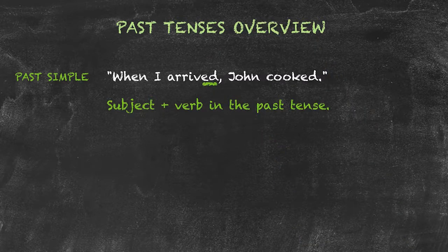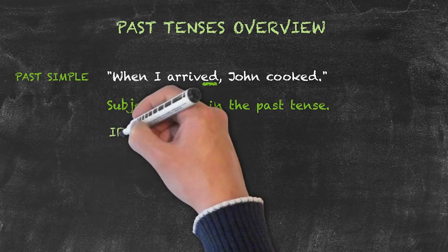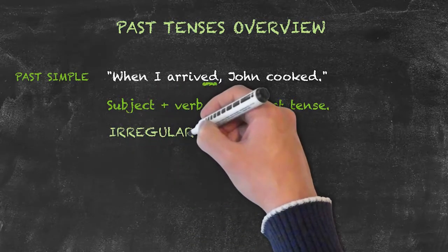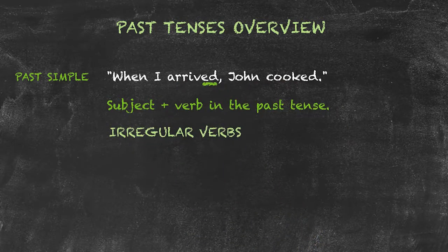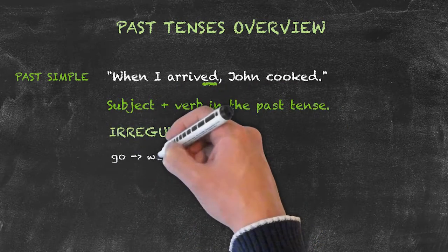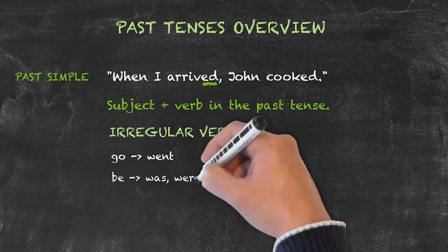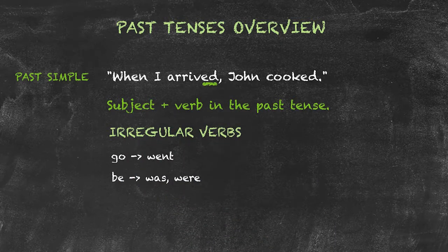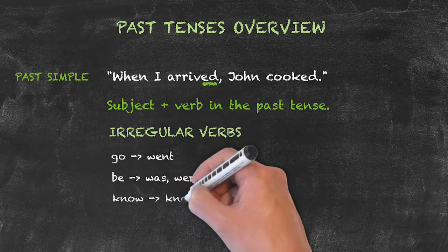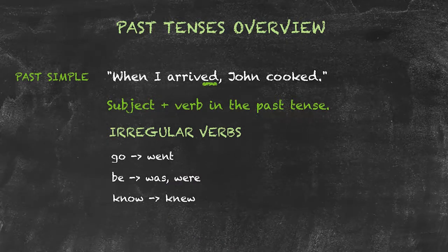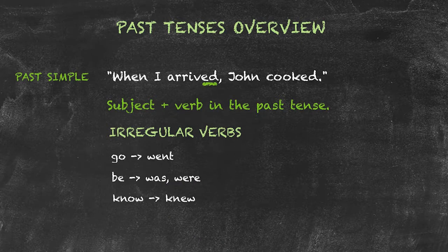However, there are many irregular verbs, such as go would change to went, be to was or were, know to knew. There are no rules for this, and they just have to be learnt individually.